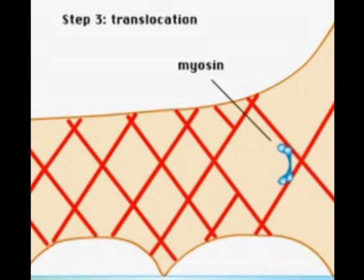This moves the cell body forward so that the cell goes in that direction. A similar thing happens at the rear end where the myosin contracting moves the rear end forward towards the front end.